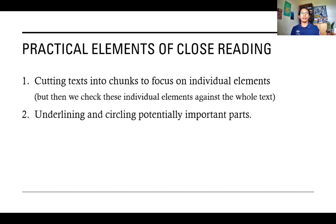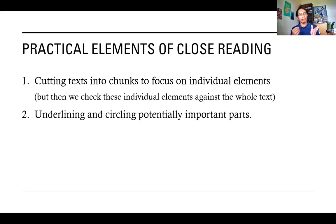The second step is also common — you will underline, circle, or highlight parts of the text that can potentially mean something, parts that have some potential meaning that fits with your purpose. For example, if you are looking for the representation of animals in a text, then whenever you find a passage, phrase, sentence, or word that relates to that, you highlight or underline it. That's what you do when you do close reading.